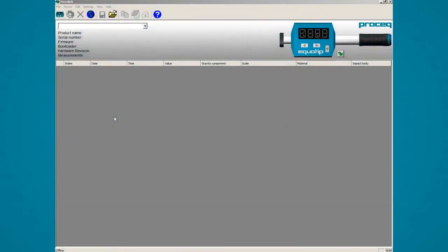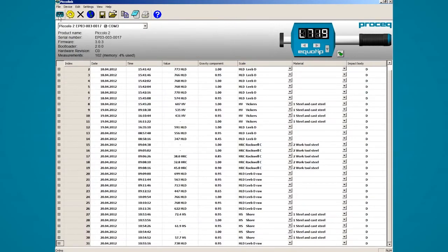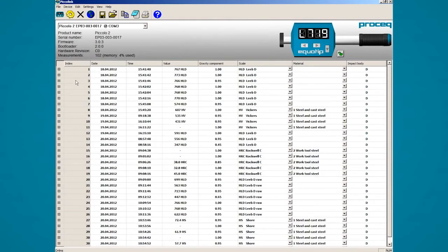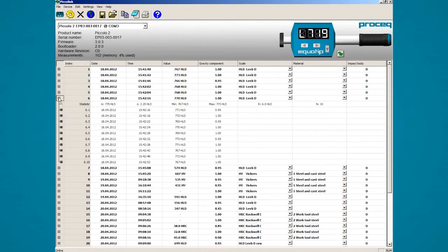The Ecotip Piccolo comes with the data analysis software Picolink. After launching the software, please click the Ecotip Piccolo icon on the top left to connect to the instrument and transfer the measurement data. All the measurements that were taken with the Ecotip Piccolo are now displayed. You can expand the view by clicking on the plus. Here you can see the details of your measurement series.